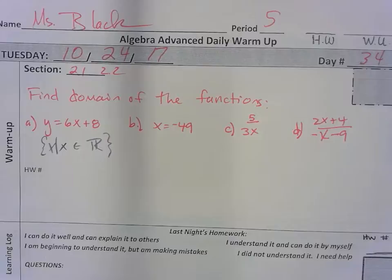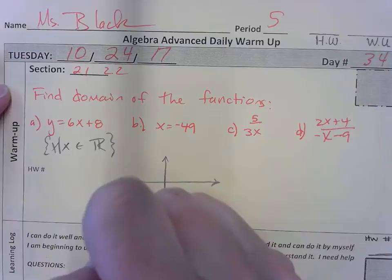How about B? Negative 49. Good. Eli says negative 49. Why, Eli? Because it's saying X equals negative 49.